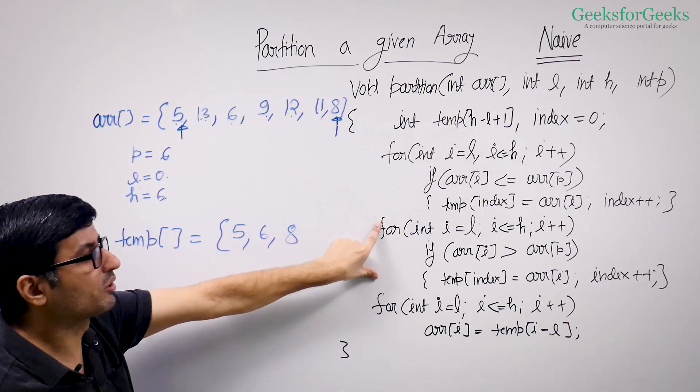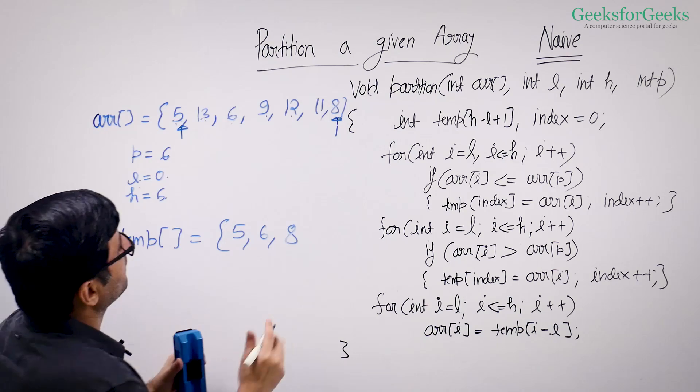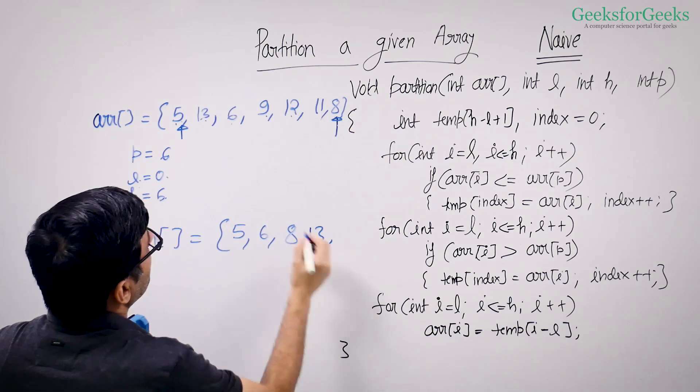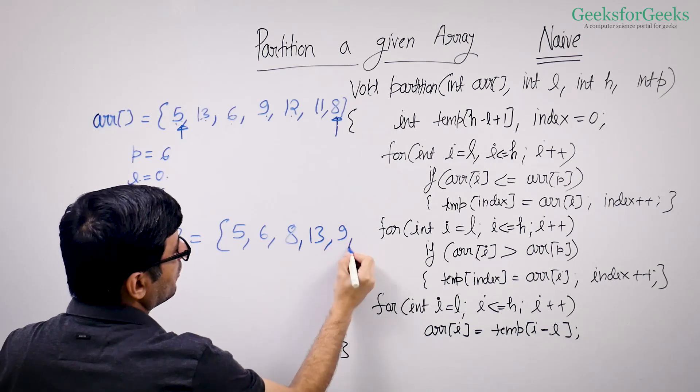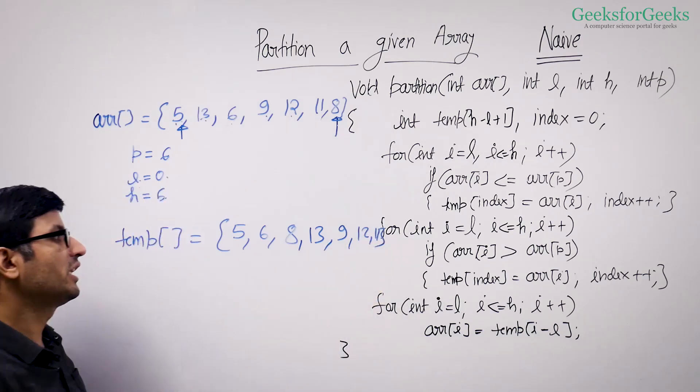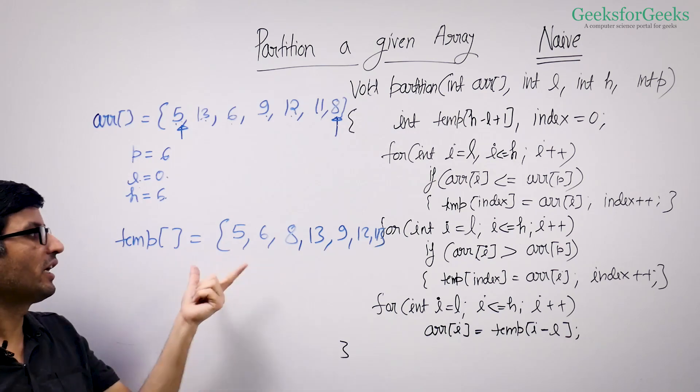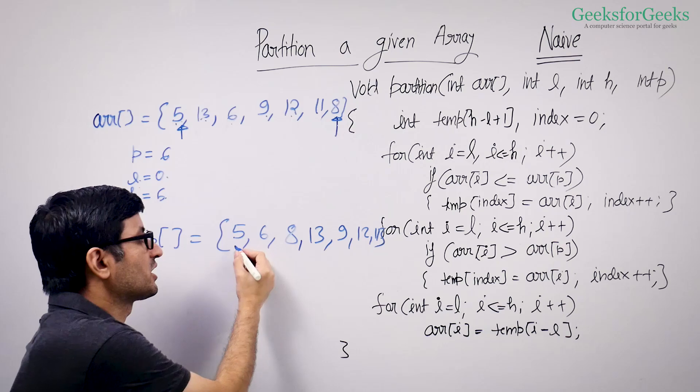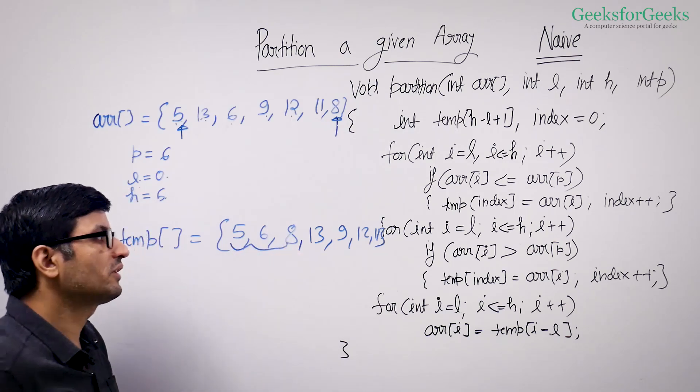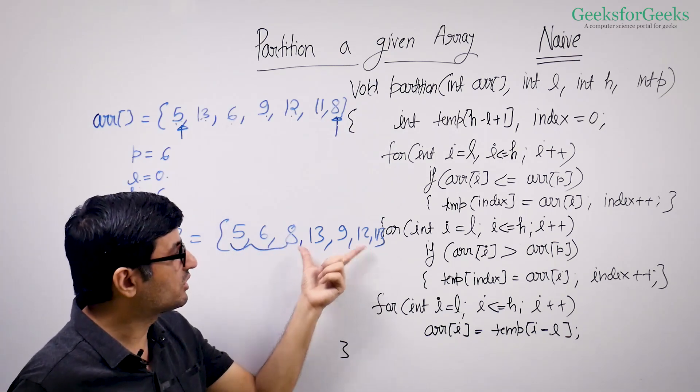Now in this step, we put all the greater elements. So we have 13, 9, 12, 11, and you can see that our temporary array has the partitioned array. It has all the elements which are smaller than or equal to 8 on the left, all the greater elements on the right.